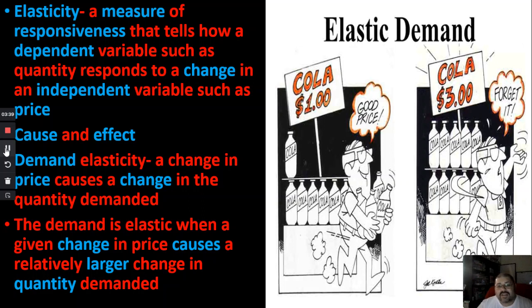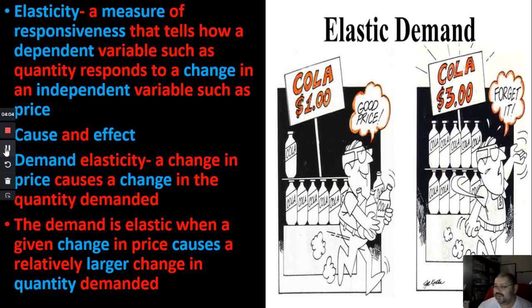Now let's say instead of two dollars, the price is $32 for a case of regular soda — Pepsi, Coca-Cola, nothing special. Are people going to buy it? No — people are going to say I might as well drink Kool-Aid, make my own soda, things like that. That's elasticity: price is really low, people buy a lot; the number of how much people buy changes because of the price.